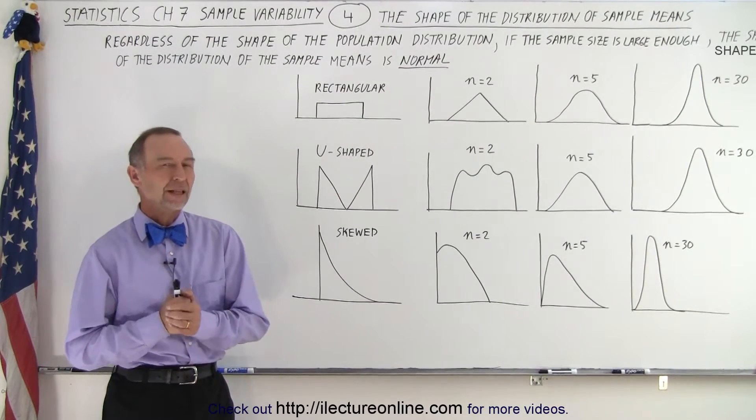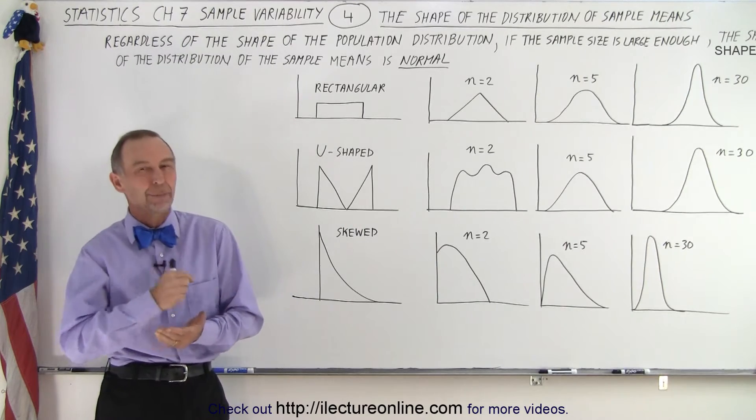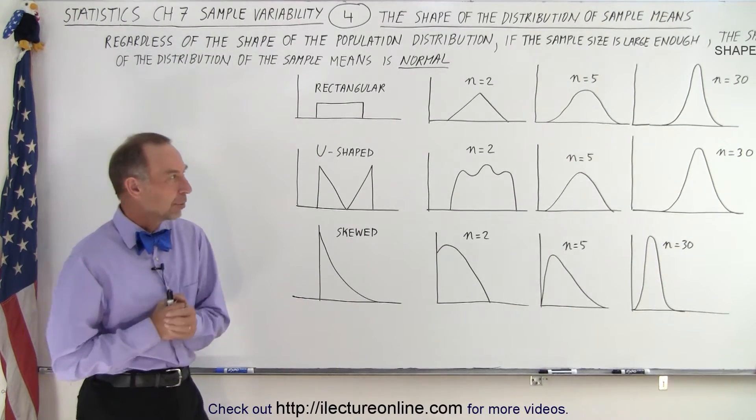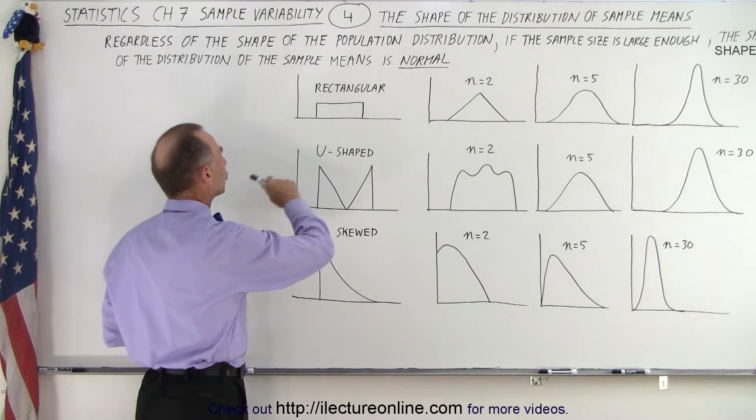Welcome to ElectronLine. Now let's take a closer look at the shape of the distribution of the sample means. Notice that we have some very peculiar population shapes.